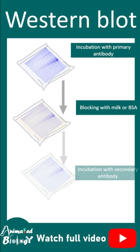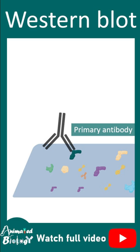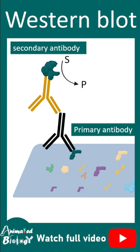Let's say the protein of interest is present. So the primary antibody would detect that protein of interest, the secondary antibody would detect the primary antibody, and a color reaction would be developed.